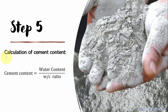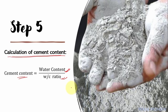Step 5: Calculation of cement content — once the water content and the water-cement ratio are determined, the amount of cement per unit volume of concrete is found by dividing the estimated water content by the water-cement ratio. The cement content so calculated is checked against the minimum cement required for durability considerations and to ensure good finishability and workability.